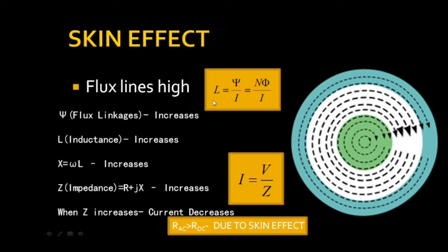When these flux linkages change, the inductance value is entirely dependent upon these flux linkages. L equals flux linkages divided by I, where Psi equals N times phi. At portion A the flux linkages are high; in portion B they are less; in portion C they are lesser than portion A. Whenever the flux linkages are high, the inductance value is high — because flux linkages and inductance are directly proportional.